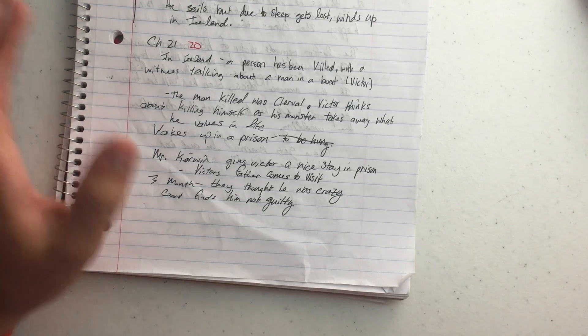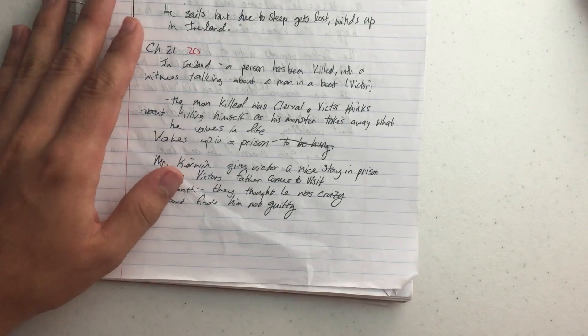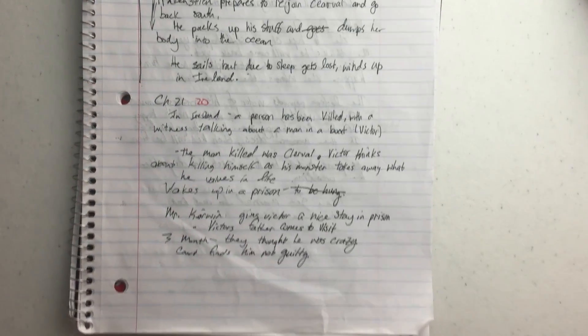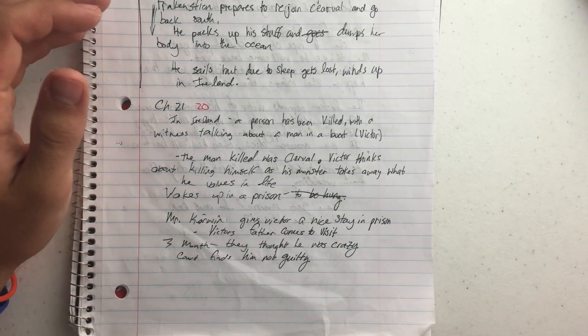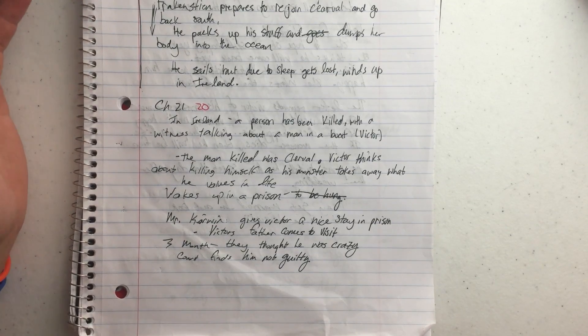This really hits home with Victor because he knows his monster is the person that did it. He's like, oh no, my monster is starting to assault me in a very personal way, just like the monster promised he would.